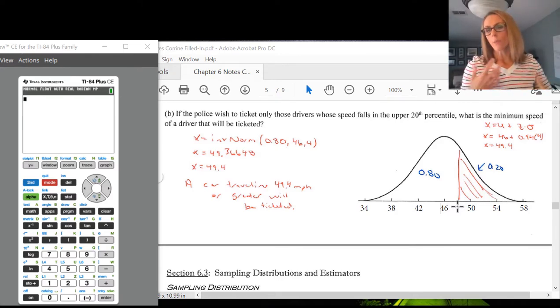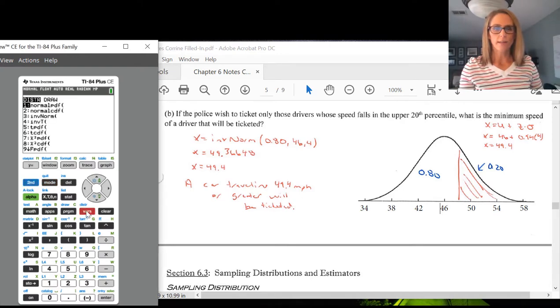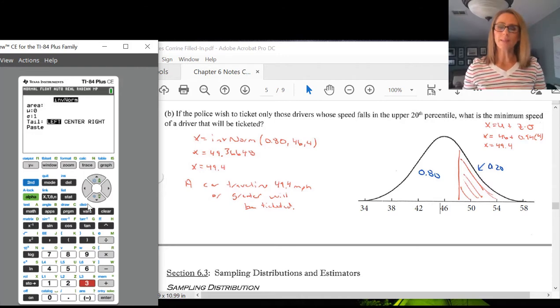Because it's a value along the bottom, we want INVNORM. So in order to get our answer, we find INVNORM. We go second, VARS, INVNORM is number 3. We can see that the area is the 0.2. We want to make sure we write that as a decimal. The mean we were given was 46 with a standard deviation of 4.